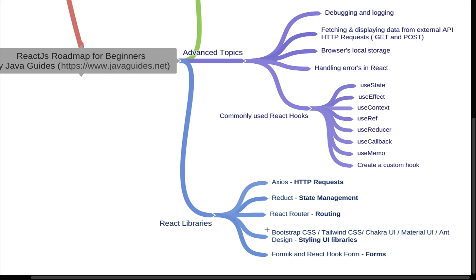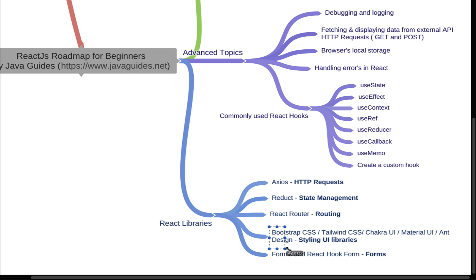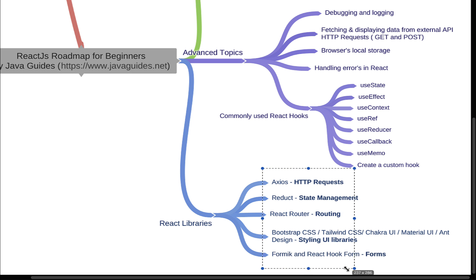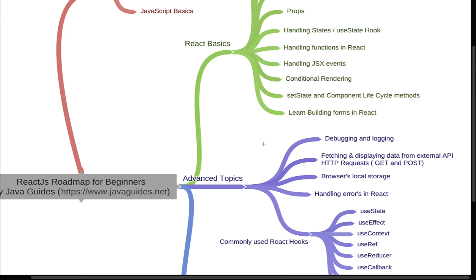For styling your React application you can use UI libraries such as Bootstrap, Tailwind CSS, Chakra UI, Material UI, and Ant Design — these are popular UI libraries available for React. If you want to work with forms, you can use Formik or React Hook Form. These are the commonly used React libraries, though there are many more available depending on your requirements.